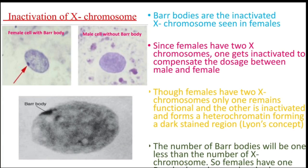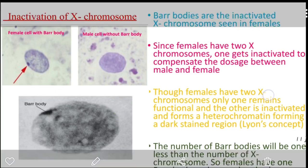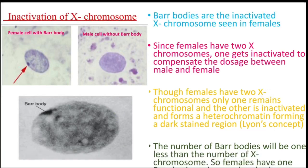There is a difference in the dosage of X chromosomes between males and females. This difference is compensated by the inactivation of one X chromosome, so that both males and females have only one functional X chromosome. This is known as the Mary Lyon hypothesis — the Barr body is the inactivated X chromosome, tightly condensed in the heterochromatin region.